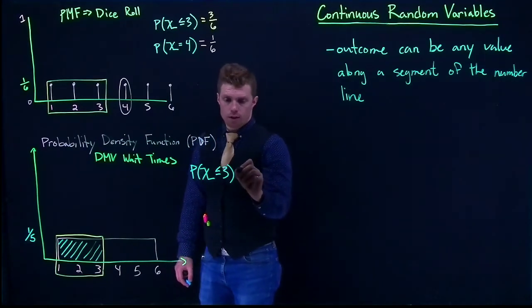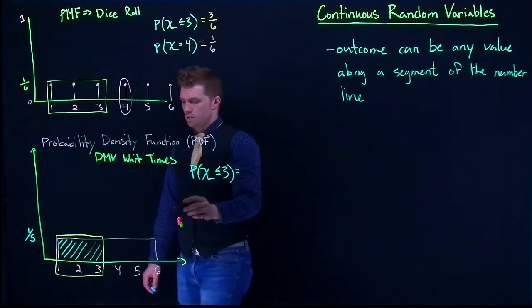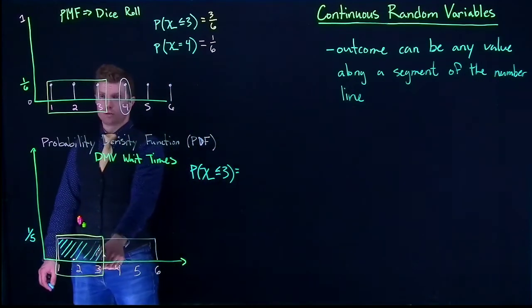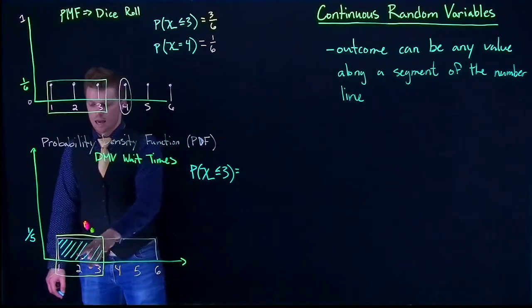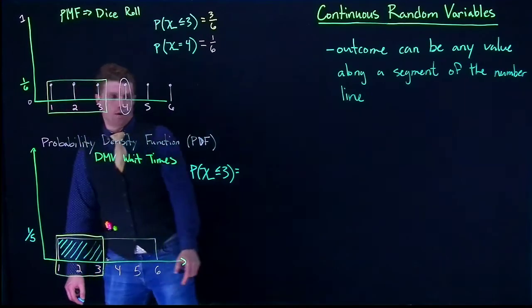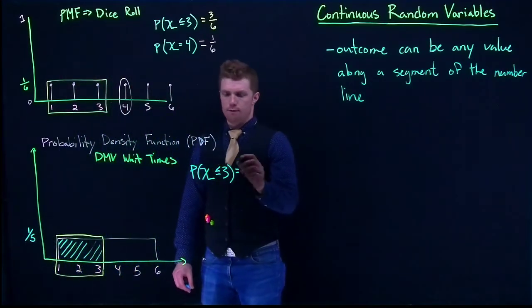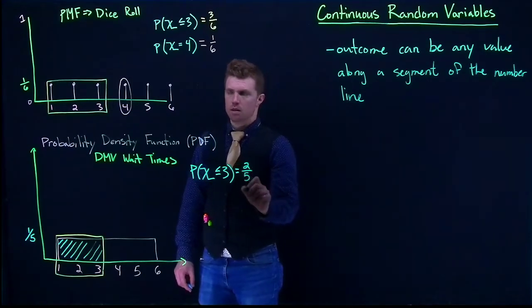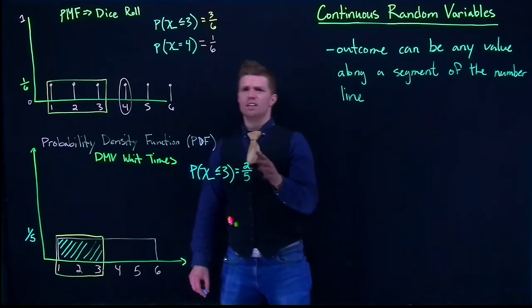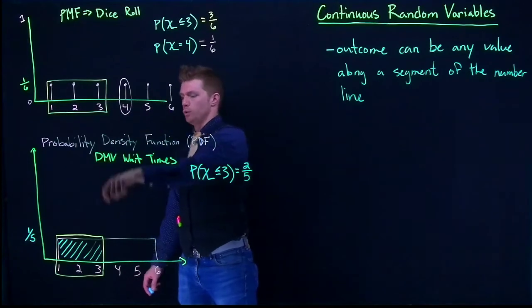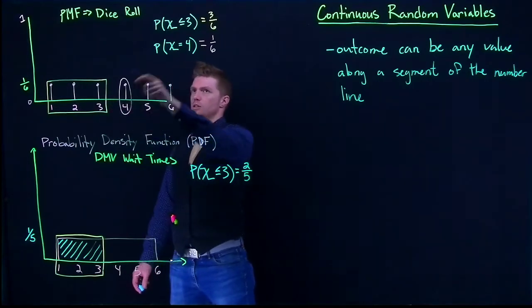What's different with the PDF is that instead of summing probability masses, we calculate the area of the box from 1 to 3 — finding the area under the curve. Since our curve is a flat straight line, it's just a rectangle. The base goes from 1 to 3, giving a width of 2, multiplied by the height of 1/5, which equals 2/5.